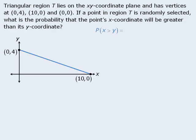Let's first examine all of the points where the y-coordinate equals the x-coordinate. These points will be all of the points on the line y equals x. Every point on this line is such that the y-coordinate equals the x-coordinate. The important feature about the line y equals x is that it divides our triangle into two regions, region A and region B. All of the points in region A are such that the y-coordinate is greater than the x-coordinate, and all of the points in region B are such that the x-coordinate is greater than the y-coordinate. So region B is the region we are interested in, since its points satisfy the condition that the x-coordinate is greater than the y-coordinate.